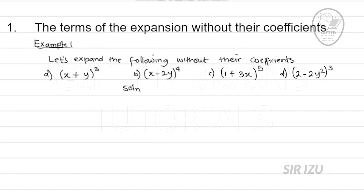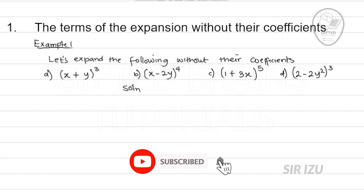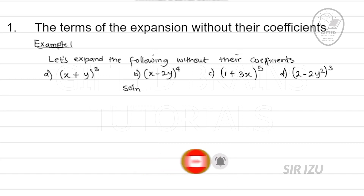Let's expand the following without their coefficients. We have: (a) x plus y all raised to power 3, (b) x minus 2y all raised to power 4, (c) 1 plus 3s all raised to power 5, and (d) 2 minus 2y squared all raised to power 3.